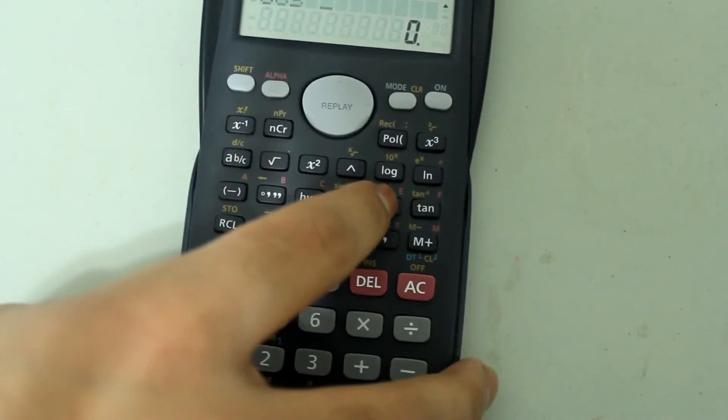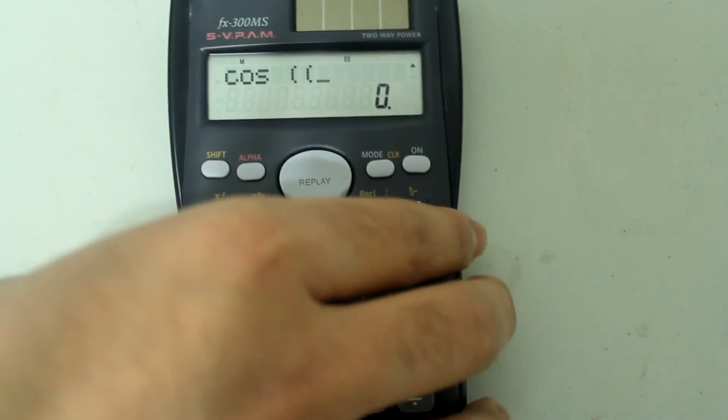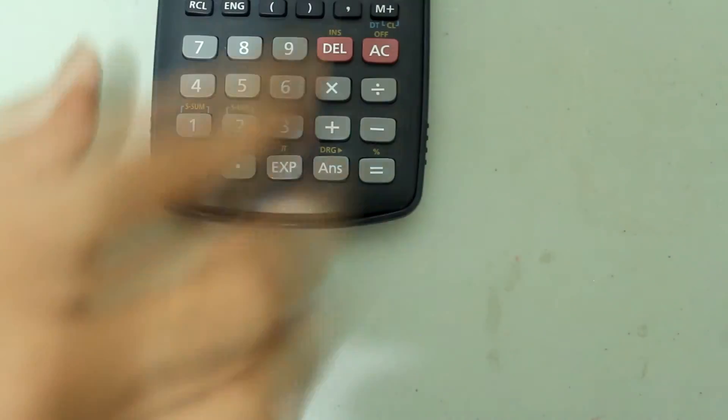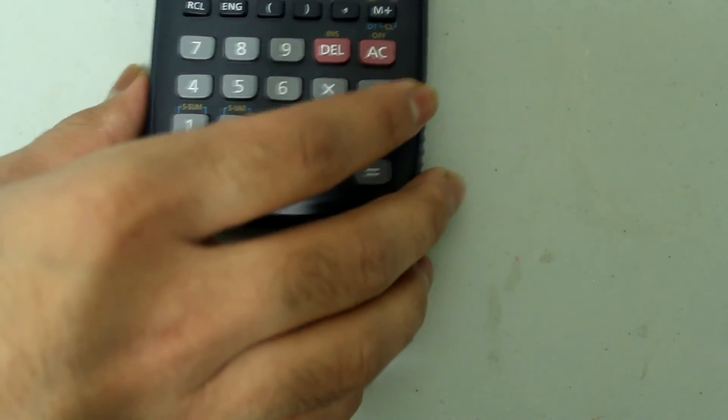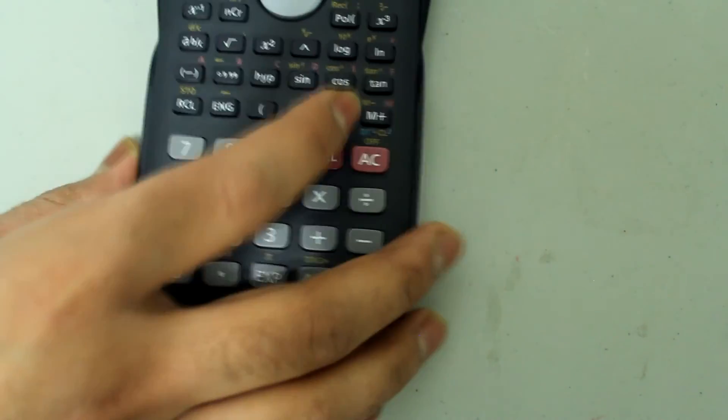I can say cosine, and then open a parenthesis, open another one, so I have two open parentheses, and then we are going to do shift, exp to select pi, divided by 3, so we are doing cosine of pi over 3, then close one of the parentheses.